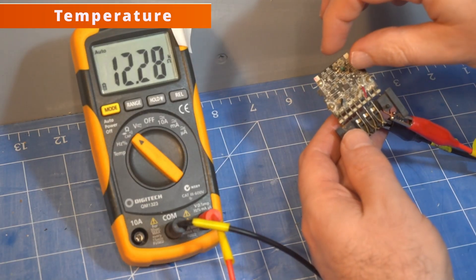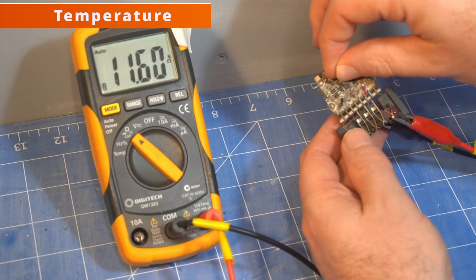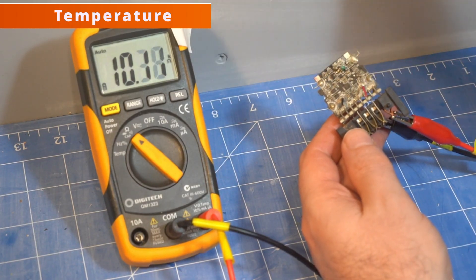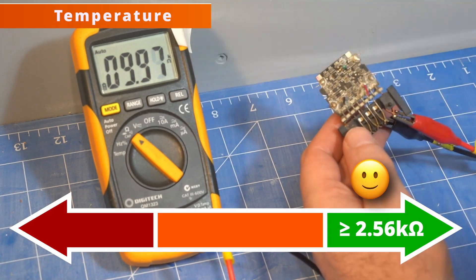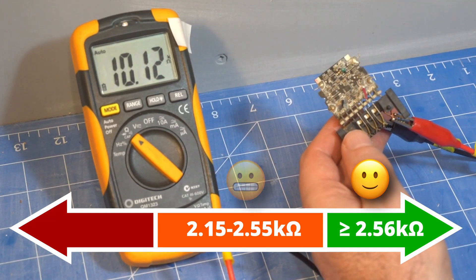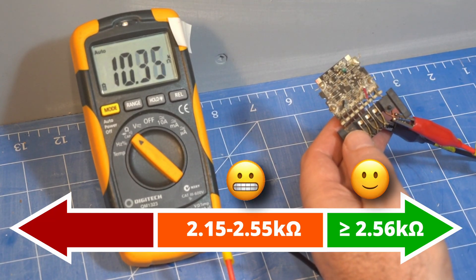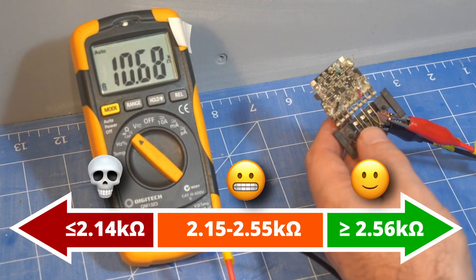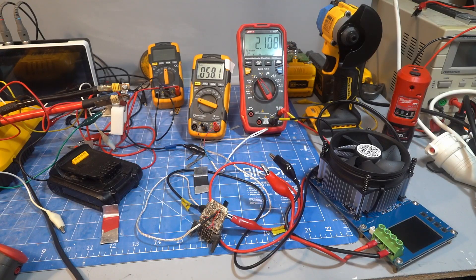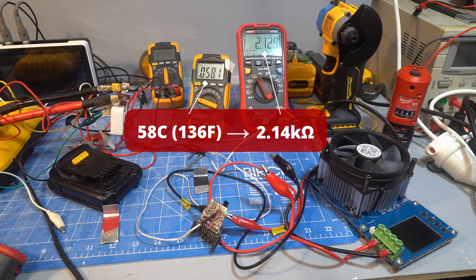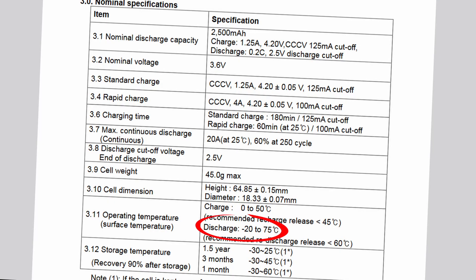The thermistor is 10kohm at 25 celsius and lowers as the temperature increases. The tool works normally down to 2.56kohm. Below 2.55kohm the light will flash. Below 2.14kohm the tool shuts off. 2.14kohm corresponds to 58 celsius which is on the lower end as most data sheets say a max of 75 or 80 celsius. This is good to see that DeWalt isn't pushing the cells too hard.